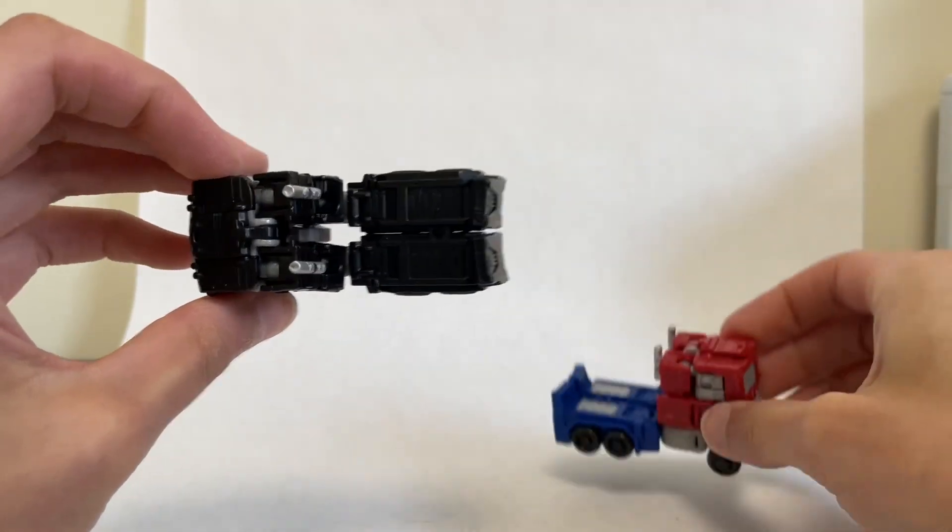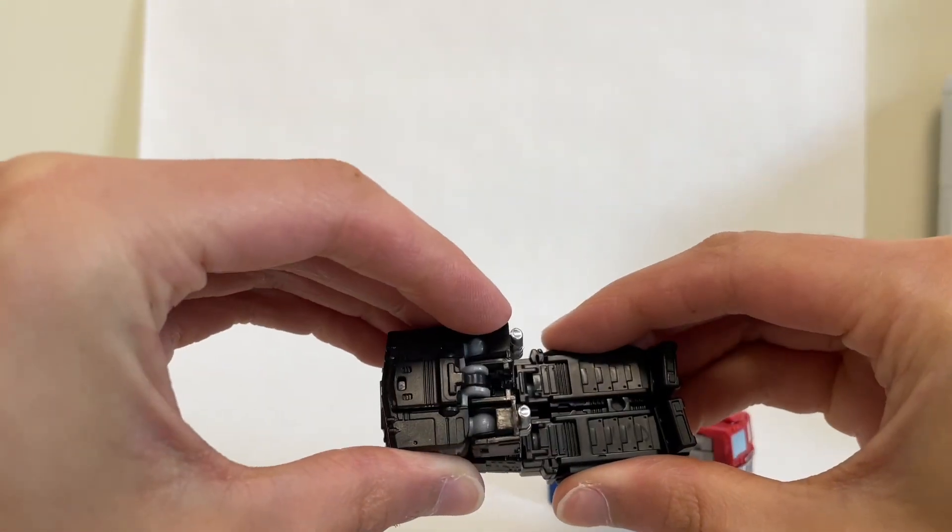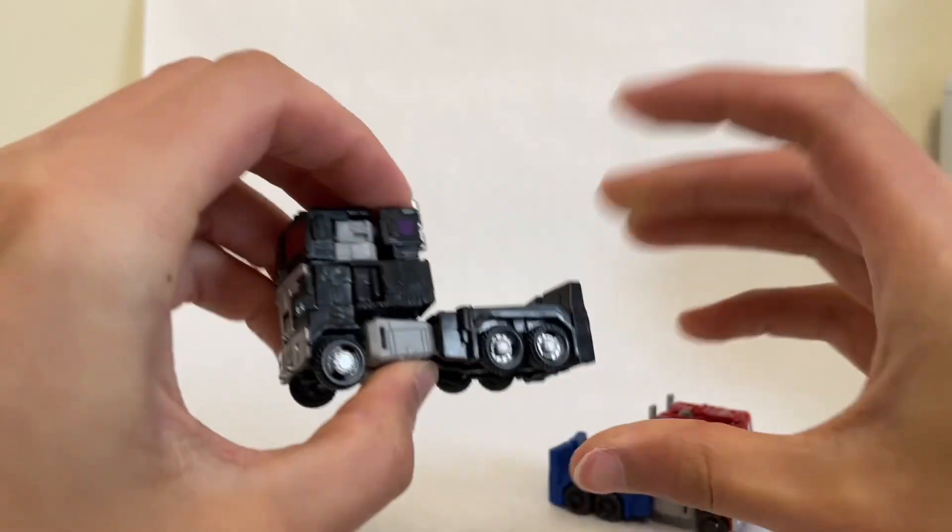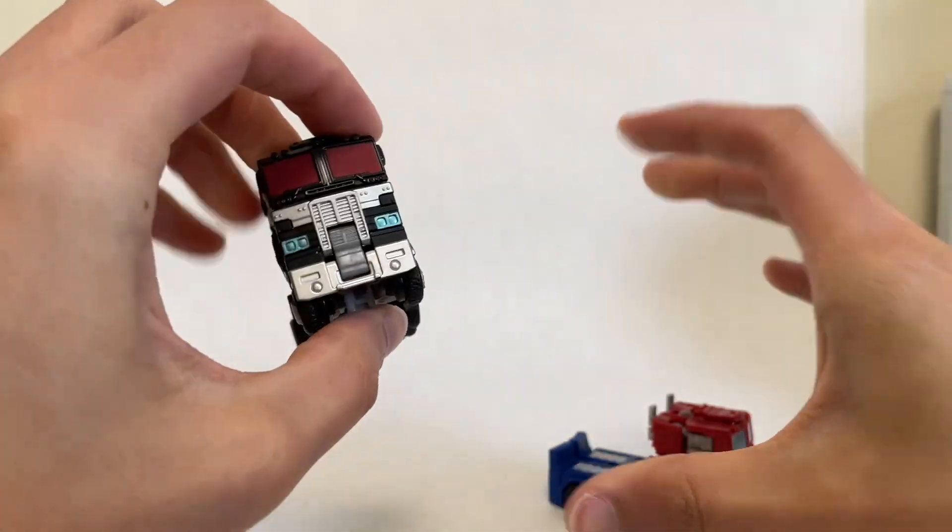So as you can see, overall nemesis, I think in total paint volume probably is less than core class optimus, but the way they distribute the paint, I think works really, really well. It looks exceptional. And for the price point, these guys are definitely a ton of fun.